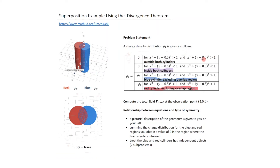Typically this problem would be given in the form of a table describing charge density distributions by region. One condition describes outside both cylinders as zero. Another condition gives zero inside both cylinders — the intersection region shown in purple. A third condition gives rho naught for the blue cylinder excluding the overlap, and minus rho naught for the red cylinder excluding the overlap, corresponding to the respective three-quarter moon sections. Given this information, you compute the total field at the observation point.